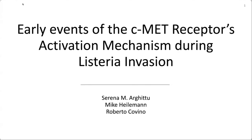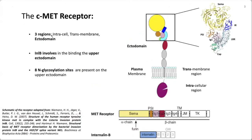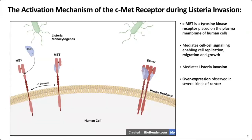Good afternoon everybody. Let me directly introduce the main character of my research, which is the human C-MET receptor. This C-MET receptor is a tyrosine kinase receptor placed on the plasma membrane of tissue-specific epithelial cells, where it regulates cell growth, migration, replication, and cell survival. When dysregulated, this receptor leads to metastasis development, and — as in the case of my project — it can mediate the internalization of bacteria such as Listeria monocytogenes.